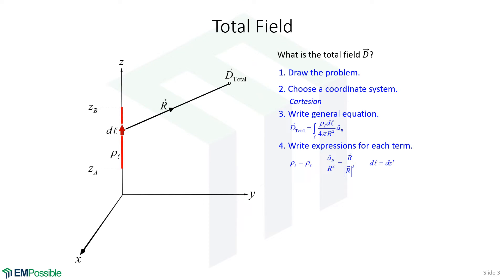Vector R is the vector connecting wherever we are along the integration — our differential current element — all the way out to our observation point. We throw those terms back into our original equation, bring constants ρ_L and 4π to the outside, and choose our limits of integration from Z_A up to Z_B. So we really just have the R vector divided by |R|³ times DZ prime as the integrand.